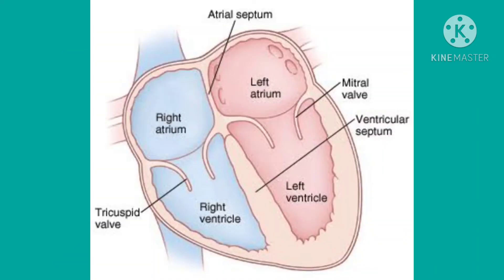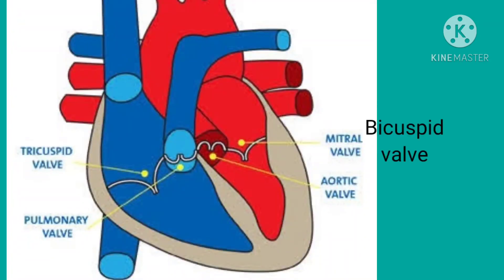A tricuspid valve is present between the right atrium and right ventricle, allowing blood to flow from the right atrium to the right ventricle. A bicuspid valve is present between the left atrium and left ventricle, allowing blood to flow from the left atrium to the left ventricle. The atria and ventricles are separated from each other by these valves.